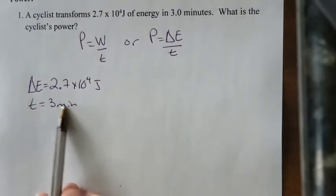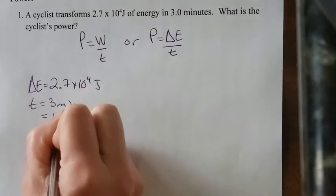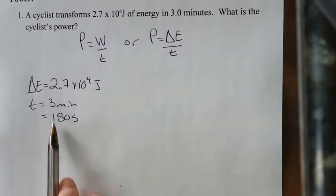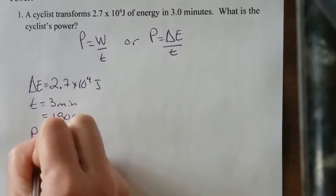However, we don't want minutes. We always have to change time to seconds. So when you change that to seconds, it equals 180 seconds. You just go 3 times 60 gives you 180. And we're looking for the cyclist's power.